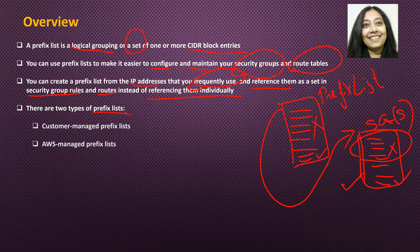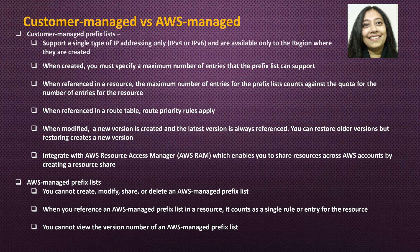There are two types of prefix list: customer managed and AWS managed. Now let us look into the details of both of them. Customer managed prefix lists support a single type of IP addressing — that is either IPv4 or IPv6 — and are available only to the region where they are created. When created, you must specify a maximum number of entries. These are the CIDR block entries that a prefix list can support. When referenced in a resource, the maximum number of entries for the prefix list counts against the quota of the number of entries for that resource.